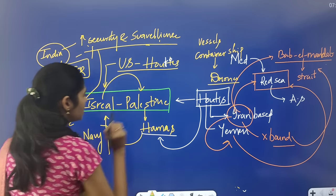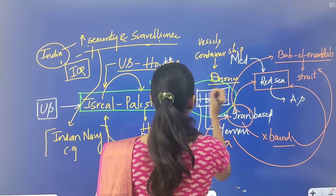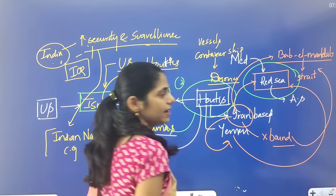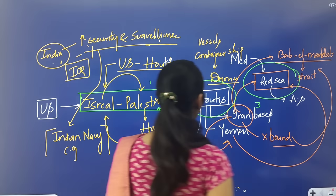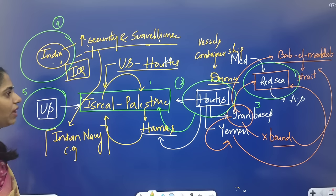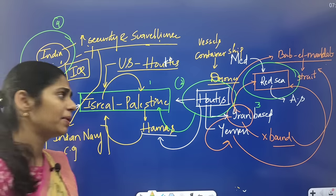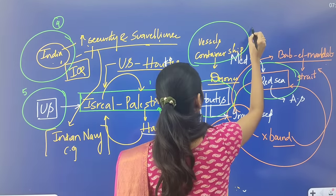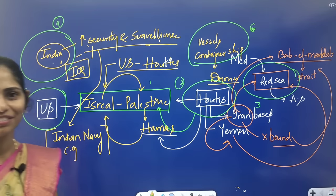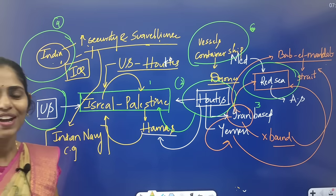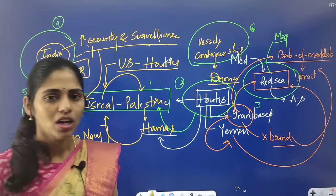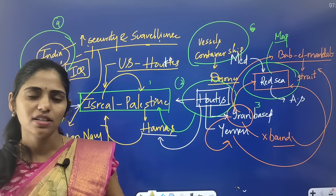We can connect this topic with different dimensions. First, it is interlinked with the Israel-Palestine issue. Second, you have to know who the Houthis are. Third, you have to know the importance of the Red Sea and Bab el-Mandab. Fourth, the role of India. Fifth, why the US is involved. Sixth, the attacking of ships using drones by the Houthis — making six important dimensions. If you started newspaper reading on January 1st, you would not have known all these dimensions.